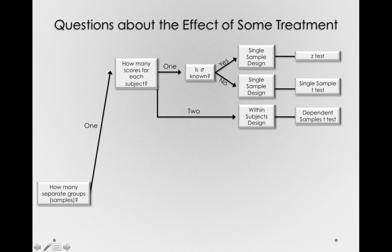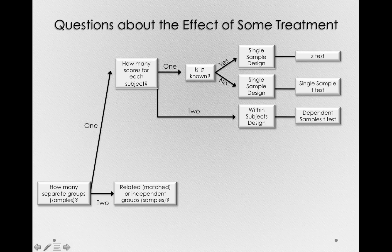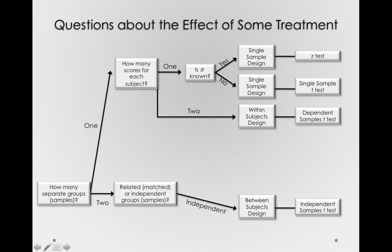Going all the way back to the start, if we don't have just one group, but we have two groups, we have to ask ourselves whether the groups are related, that is they're matched in some way. Are they twins, or are they independent groups? That is, we have totally separate groups of people taking totally separate treatments. Now if they're independent groups, that's the between-subjects design, or an independent samples t-test.